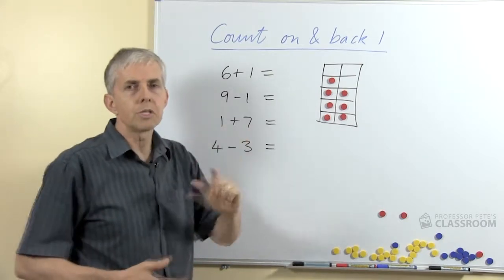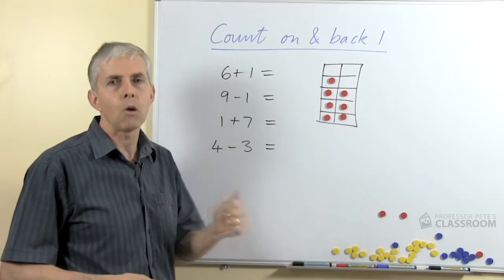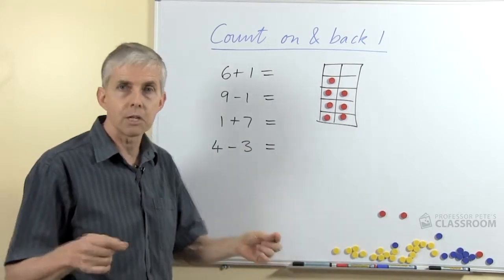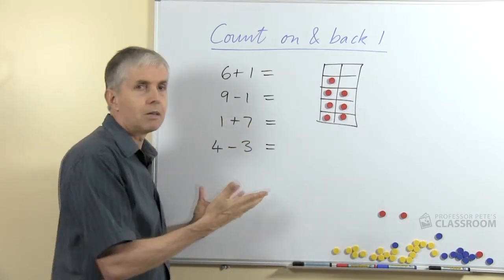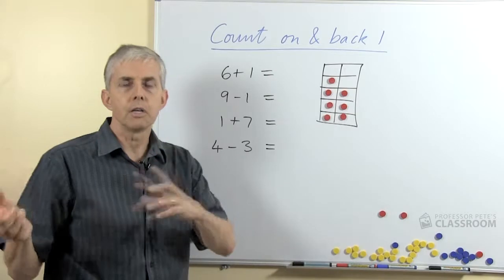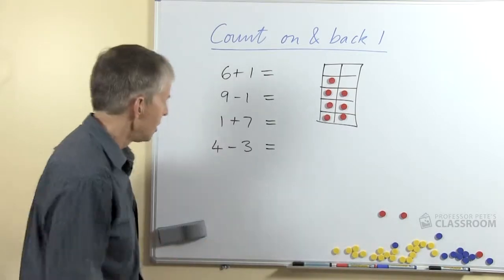So we want students to recognize that if we're only adding 1 or 2, and I wouldn't go any further than that, then we can use a counting strategy. But if it's the other way around it's still the same number, so there'd need to be some practice in recognizing the turnaround nature of the number facts.